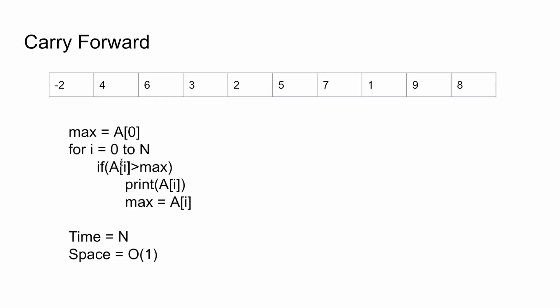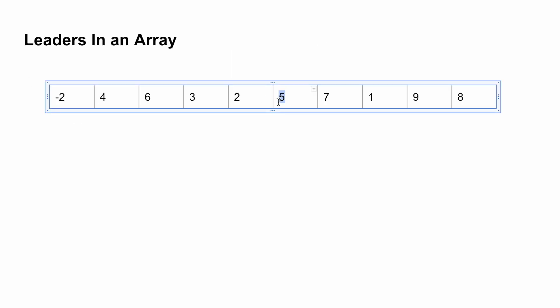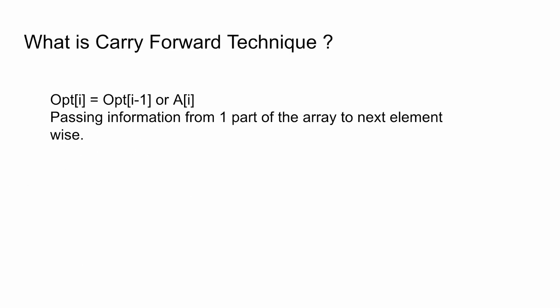So what is the approach we will follow? We will just store the maximum element, and if the current element is greater than the maximum element, it will automatically be greater than every other element on the left. By this way, we are able to reduce the time complexity from O(n²) to just O(n). So carry forward means you store the optimized solution at any given point, and that optimized solution either stays the same or continues to change — it doesn't have to be just the maximum.